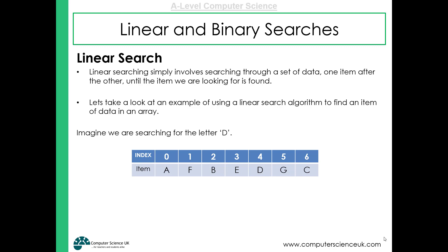So if we wanted to find the letter D, the search algorithm would start at index 0 and look there. It's an A — that's not a D — so it adds 1 to the index. It now looks at index 1 and finds an F — that's not a D, so the comparison is false and 1 is added again. It looks at index 2, finds a B, moves on — it's an E, moves on — it's a D. It's found the item and the linear search algorithm would stop.